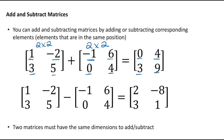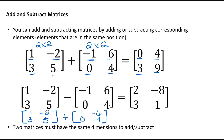For subtraction, instead of keeping track of all the negative signs, I like to think of subtraction as addition of the opposite. I rewrite the first matrix, switch to an addition sign, and multiply every element in the second matrix by negative 1. So negative 1 becomes 1, 6 becomes negative 6, 0 stays 0, and 4 becomes negative 4. Then: 1 plus 1 is 2, negative 2 plus negative 6 is negative 8, 3 plus 0 is 3, and 5 plus negative 4 is 1. The matrices must have the same dimensions to add or subtract.